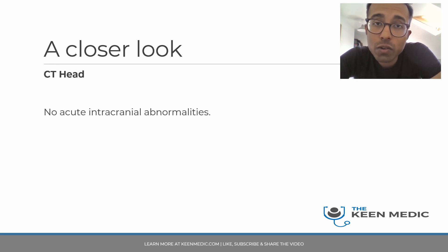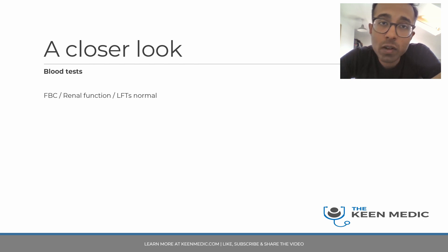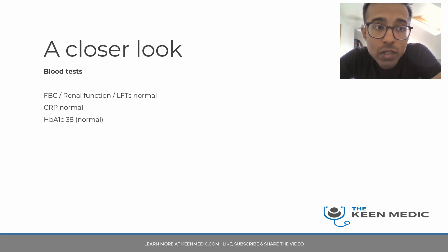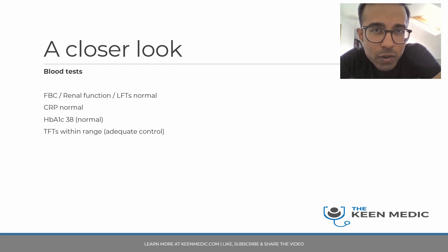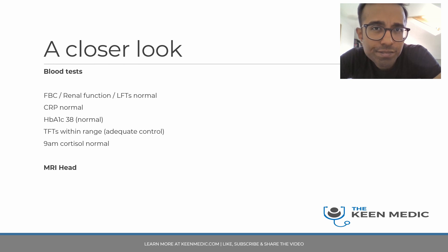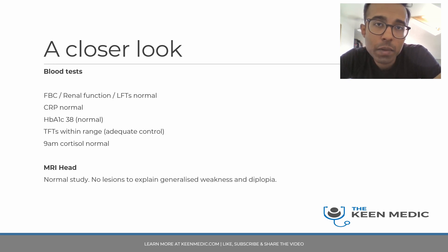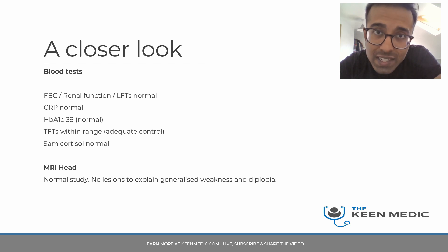Her CT head is fine - there are no acute abnormalities of note. You then wait for the blood tests. All the organ functions are normal: FBC, renal function, liver function are normal, CRP is normal. HbA1c is 38 - that is normal, so she does not appear to have diabetes. Thyroid function is also fine, indicating adequate control rather than over-treatment, so she's not become hypothyroid. A 9am cortisol was done the following morning to look for evidence of adrenal insufficiency, and that is also within normal ranges. MRI head is fine - there is no intracranial lesion that would explain the weakness.